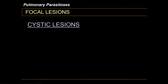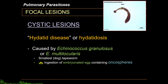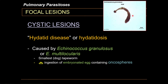These are best exemplified by hydatid disease or hydatidosis. Hydatidosis is caused by Echinococcus granulosus or Echinococcus multilocularis. It is the smallest tapeworm, and it is also called the dog tapeworm. The route of infection is ingestion of embryonated eggs containing onchospheres. If you look at the adult worm, you would notice that there are only three proglottids. This is in contrast to other tapeworms which may contain hundreds or even thousands of proglottids, making Echinococcus the smallest tapeworm.